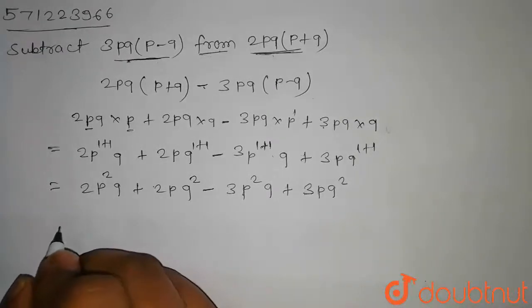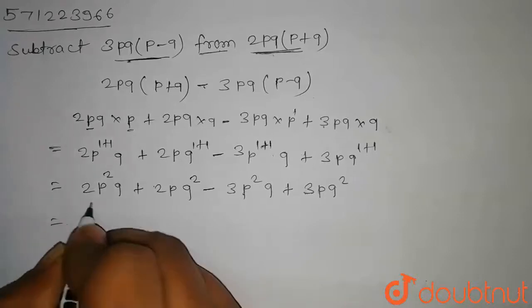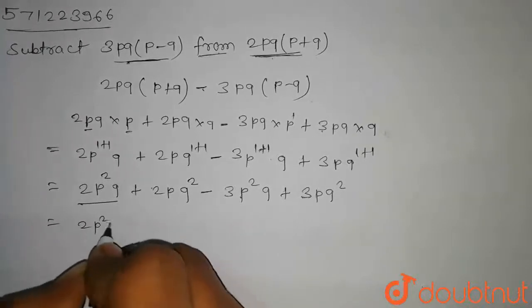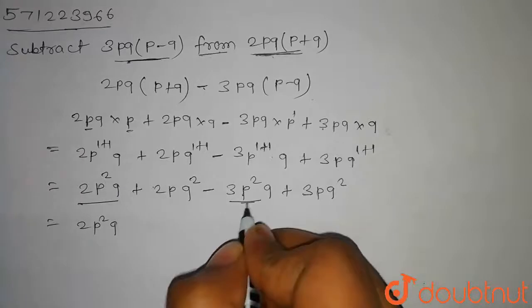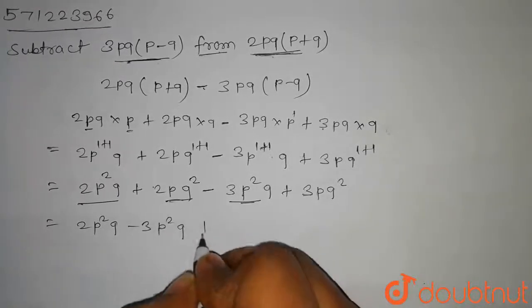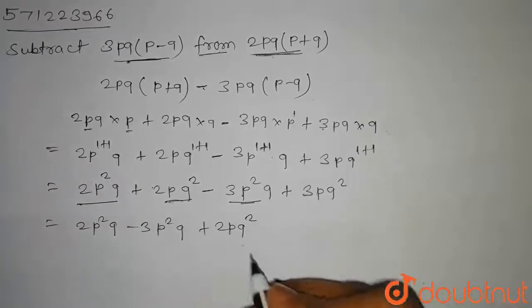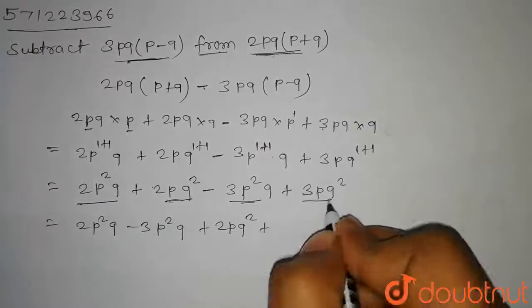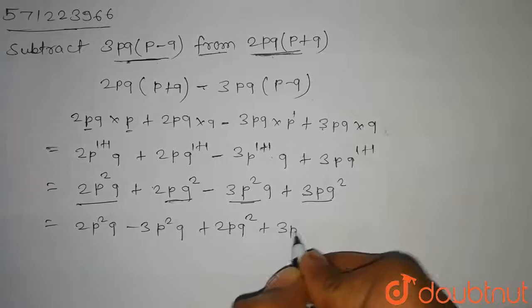Now we will bring the like terms together. So we get 2p square into q and this is minus 3p square into q and this is 2pq square plus 3pq square.